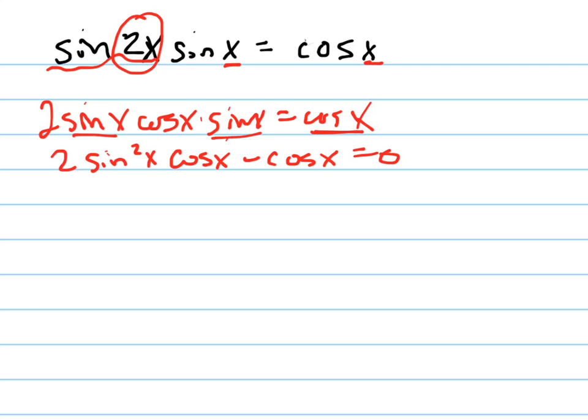Because whenever we have equations, we want to set them equal to 0, so we can factor and use the zero product property, which is what I'm going to do right now. So I'm going to take a cosine x out. That will leave me with a 2 sine squared x minus 1 inside.